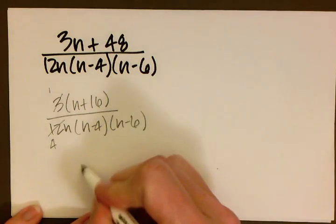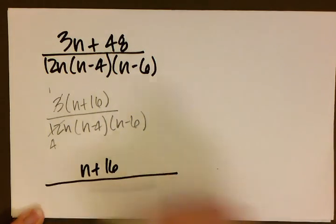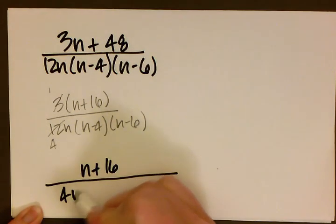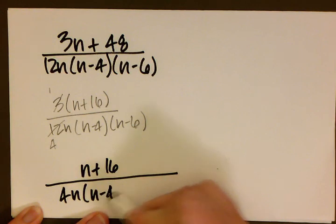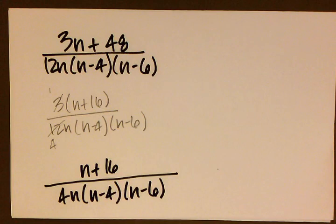Which is n plus 16, that's going to be over 4n times n minus 4 and n minus 6. And that is the final answer.